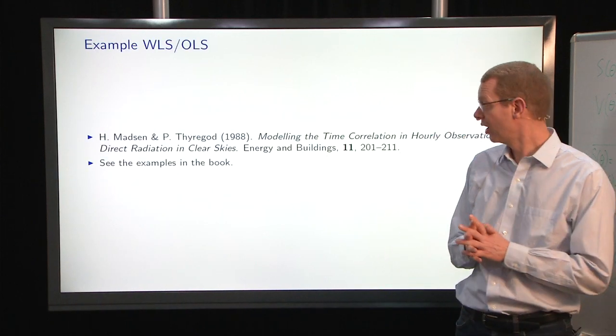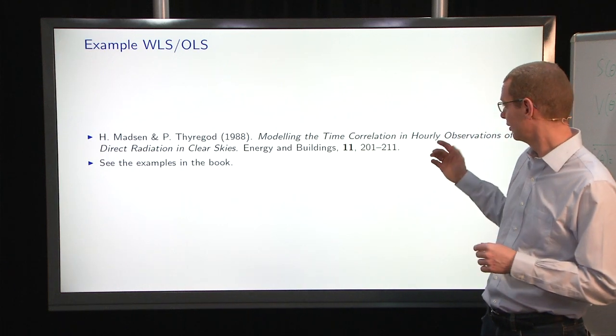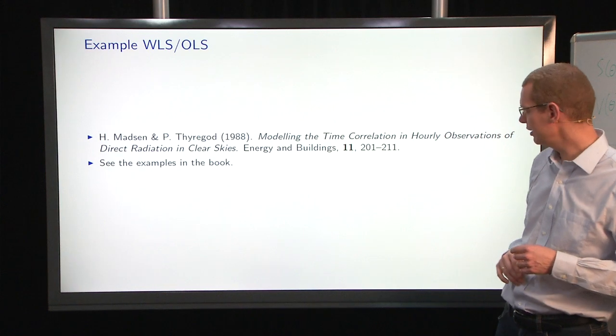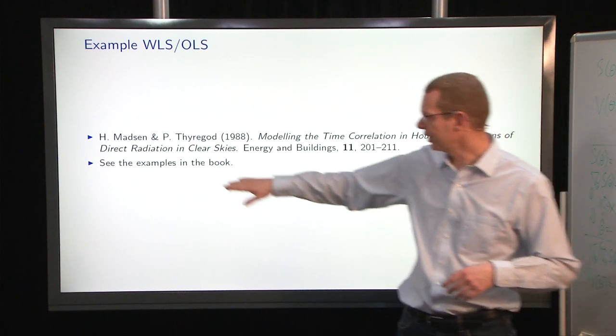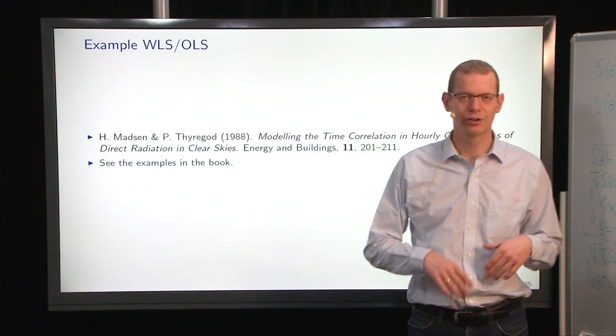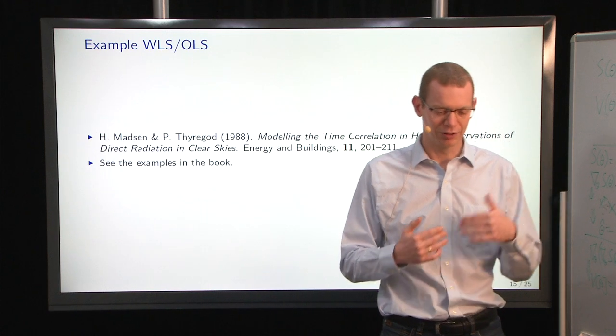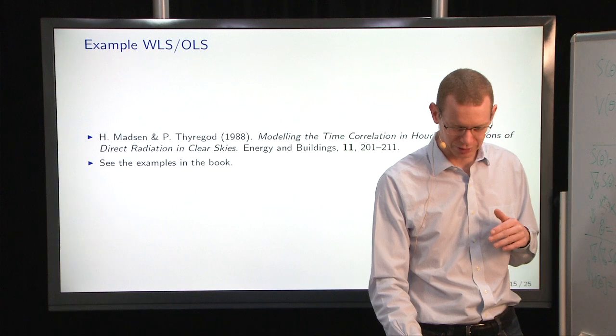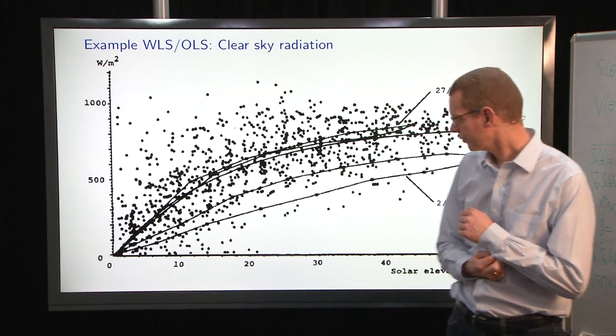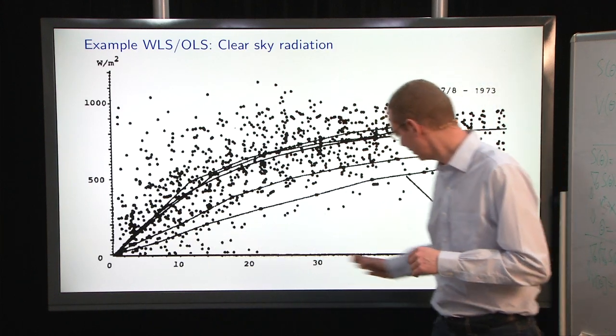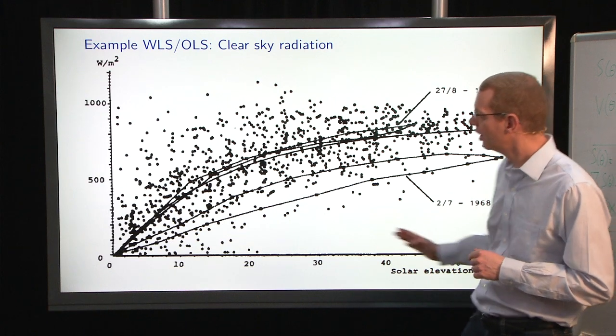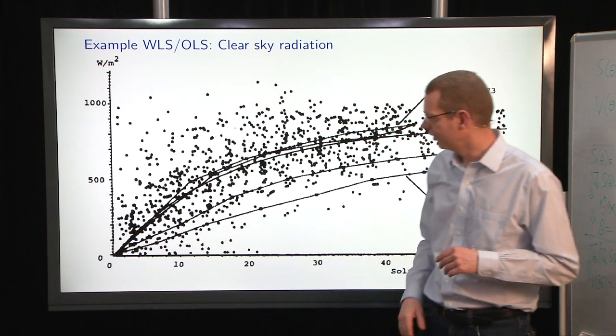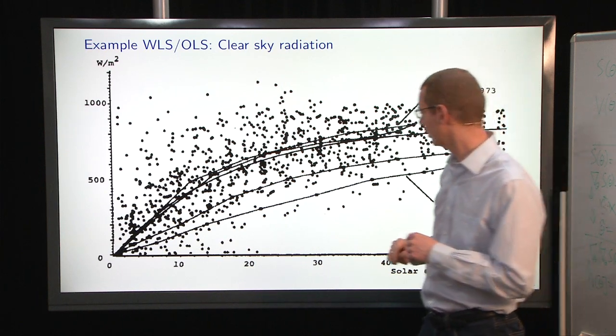But how does it perform? One example is a fairly old paper about modeling the temporal correlation in hourly observations of the direct radiation in clear skies. So we're looking at the direct radiation and how that depends on the solar elevation. So you have the solar elevation here and then you have the radiation on the y-axis. And then we have a cloud of observations here.